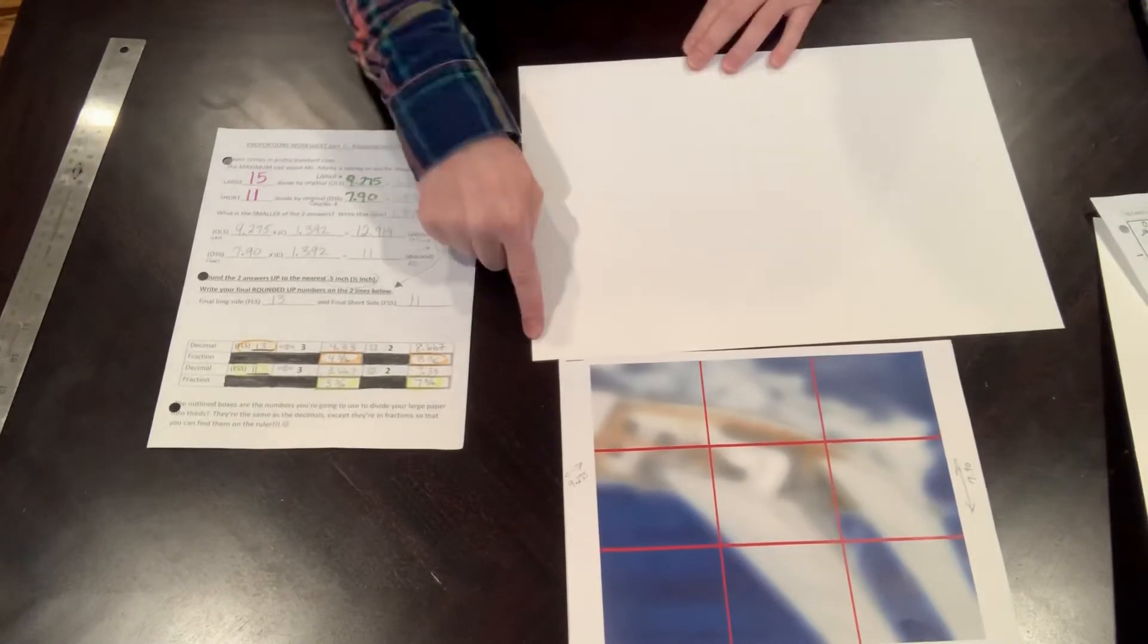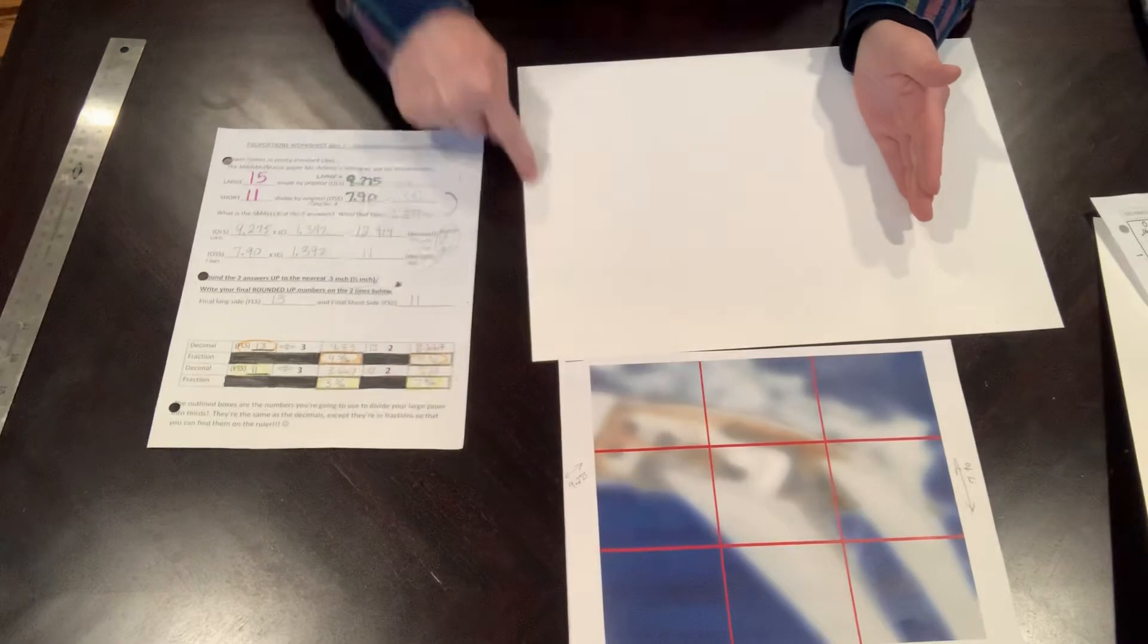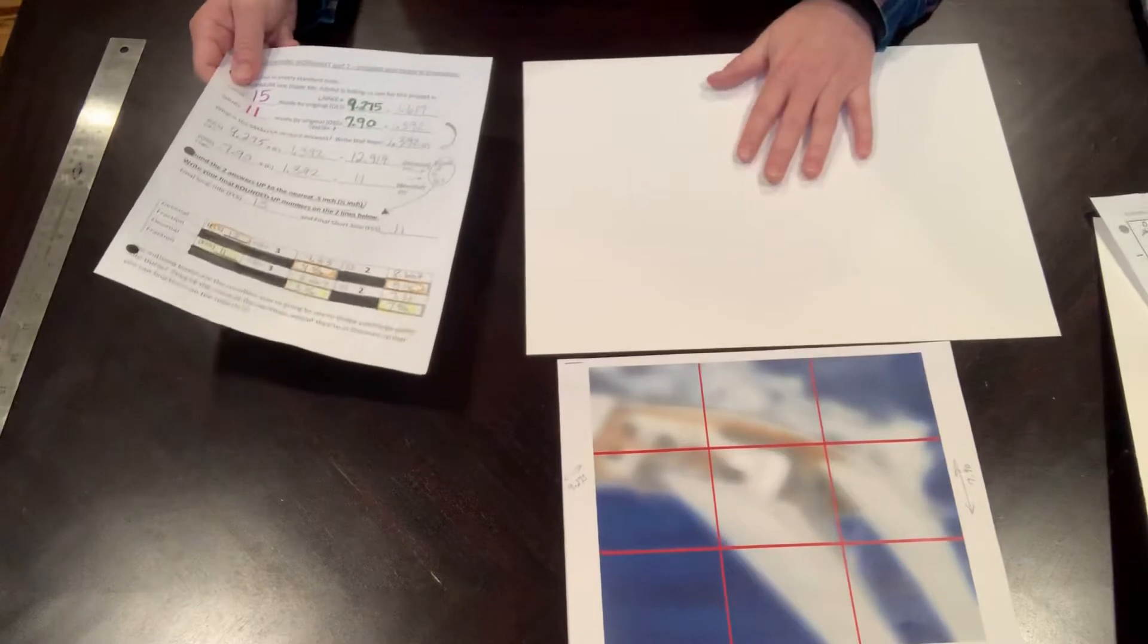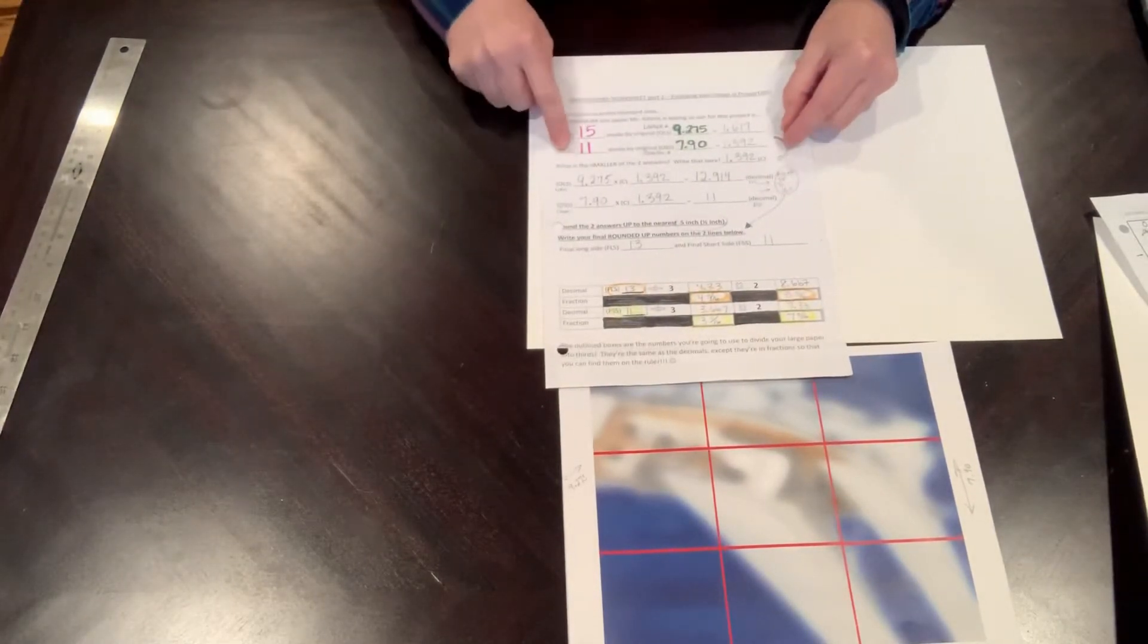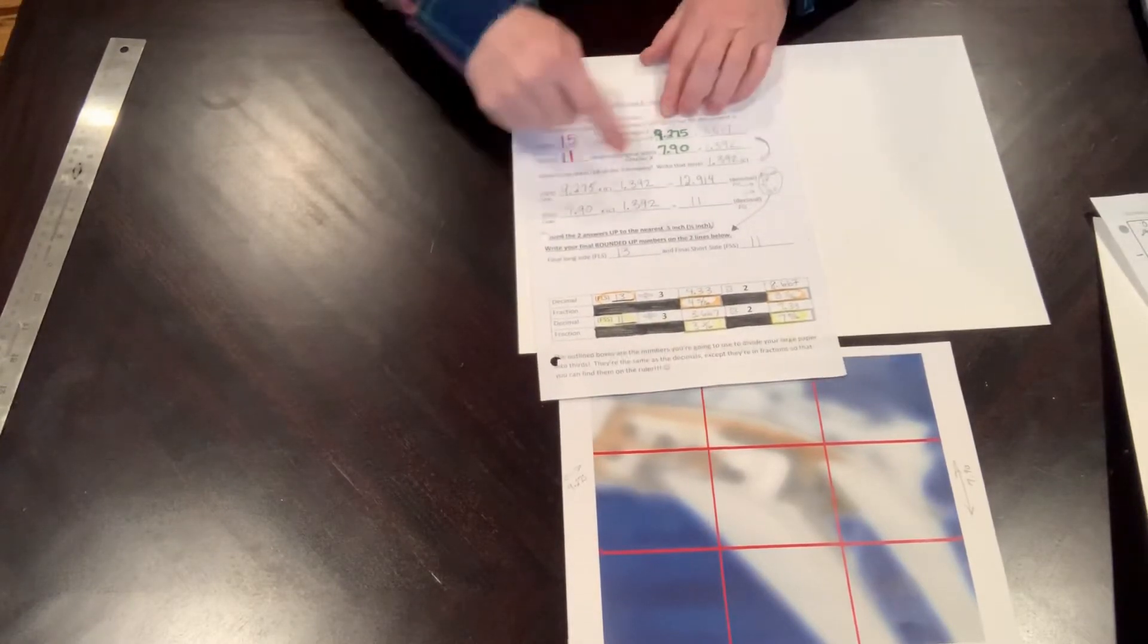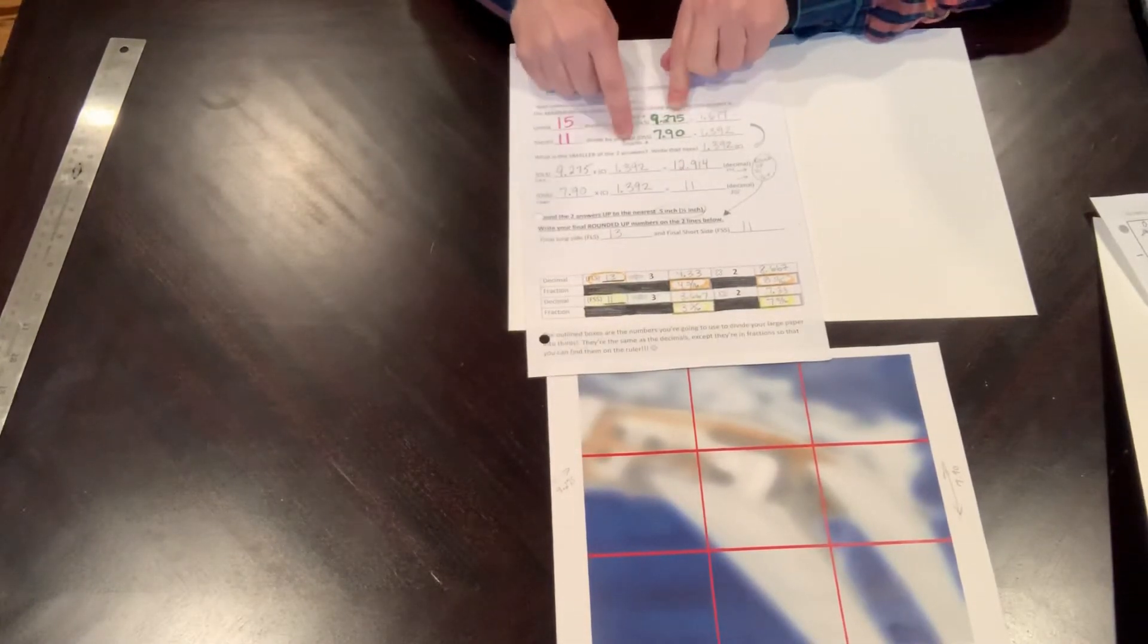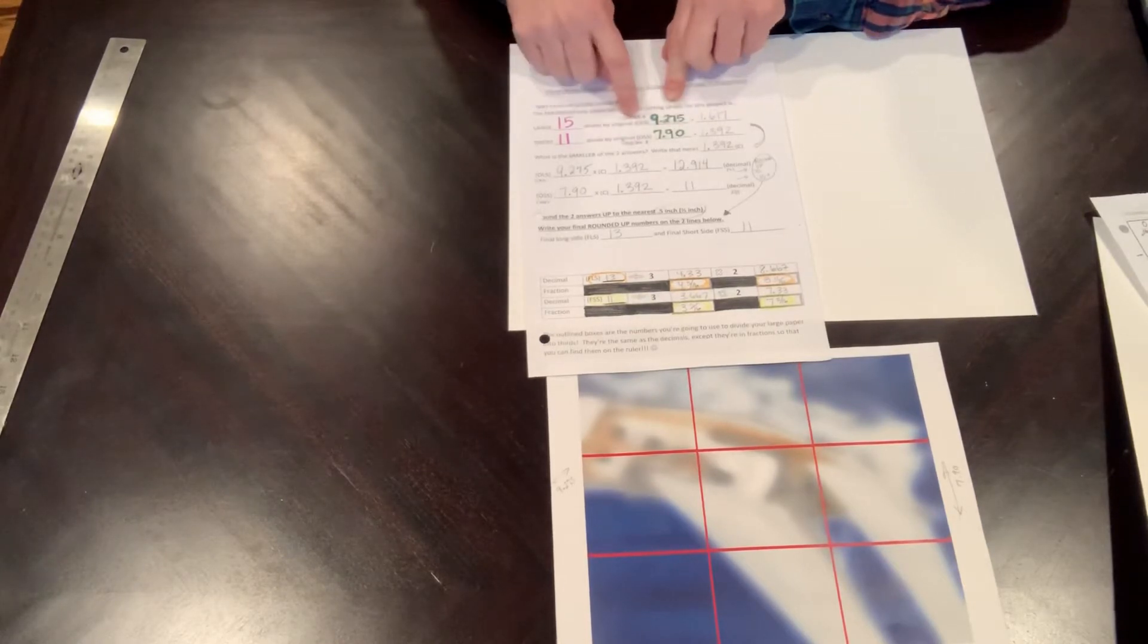I cannot extend this 11 to be 15, so what I needed to do was figure out the proportion of this image on this sheet of paper. I took the large side which is 15 and the short side which is 11 (that's this sheet), then I used my original image dimensions. My large side was 9.275 and my smaller side was 7.90.